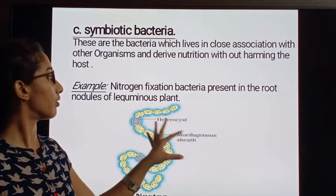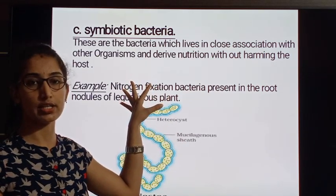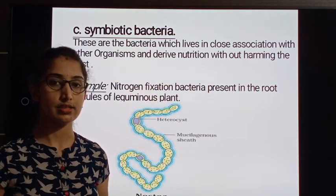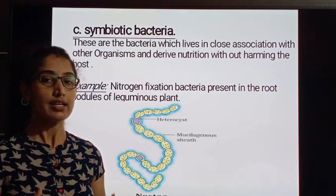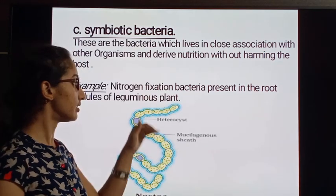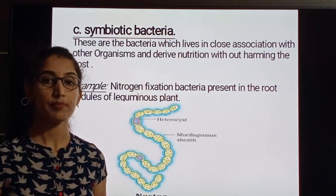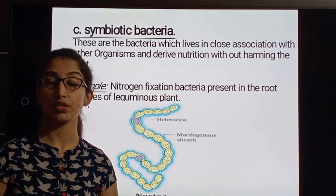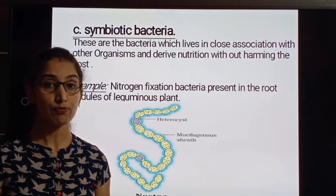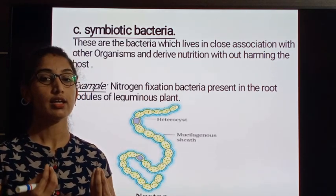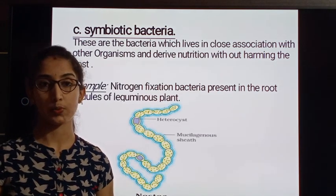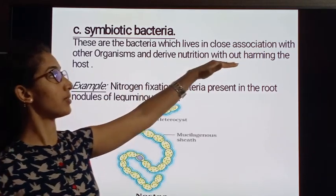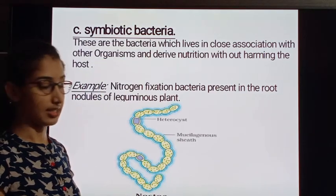The complete body of nostoc is covered and protected by a mucilaginous sheath. Nostoc and many other bacteria helpful in nitrogen fixation are present in root nodules. These root nodule bacteria fix atmospheric nitrogen for the plant and also obtain nutrition from the plant — so they are beneficial to the plant while taking nutrition from it, hence they are called symbiotic bacteria.